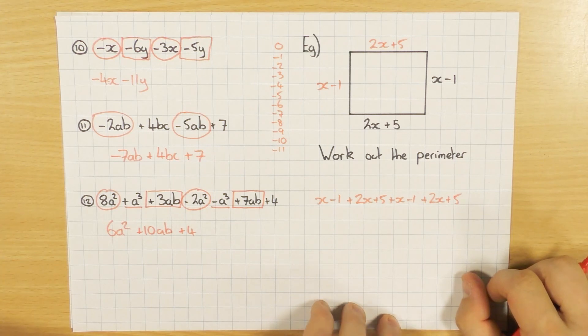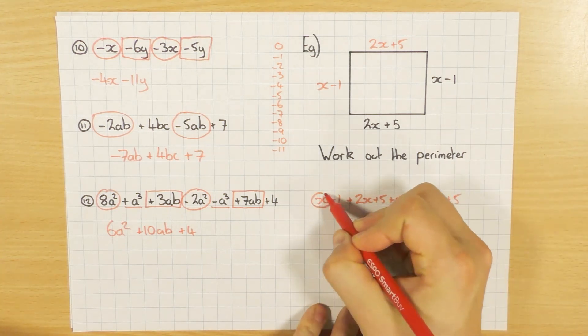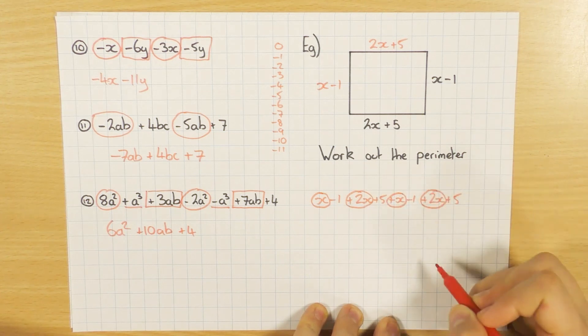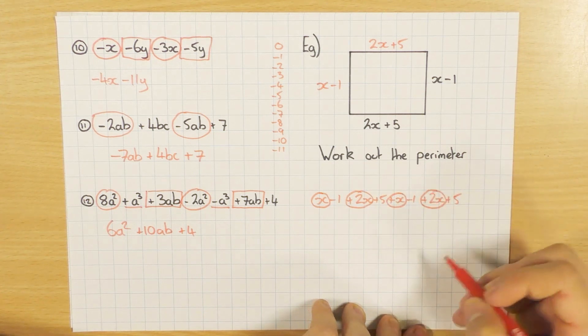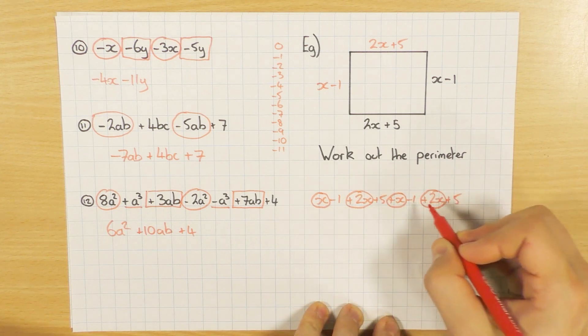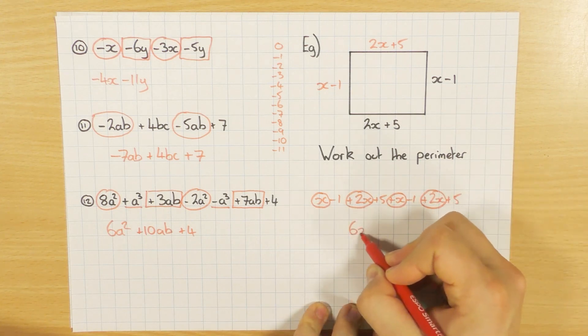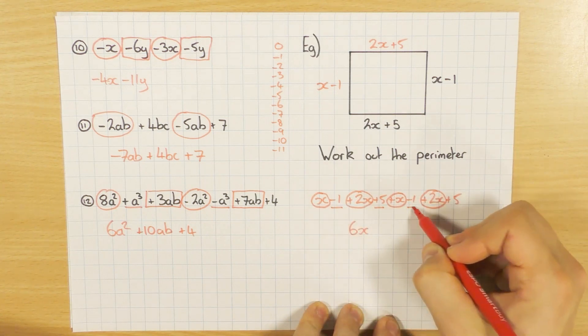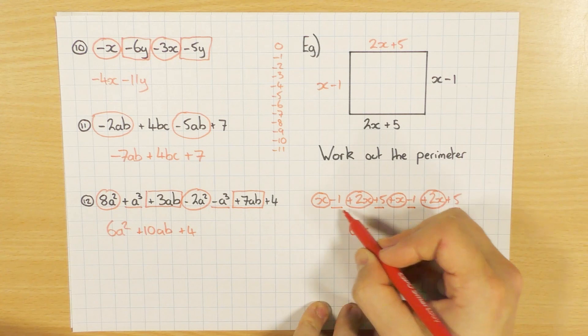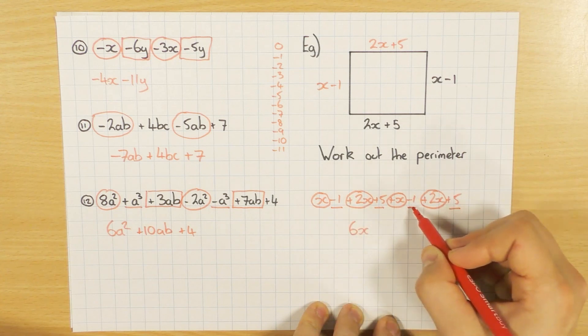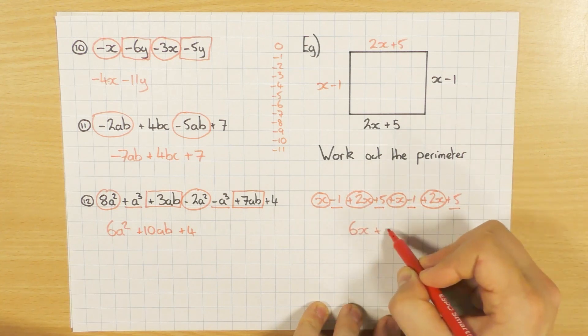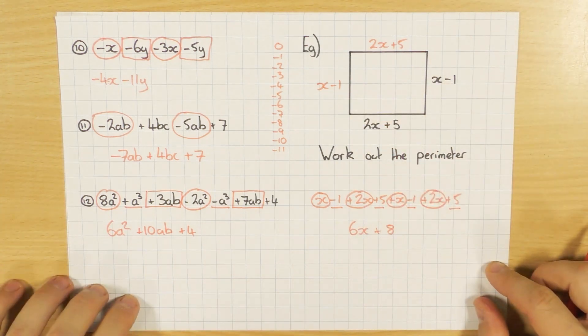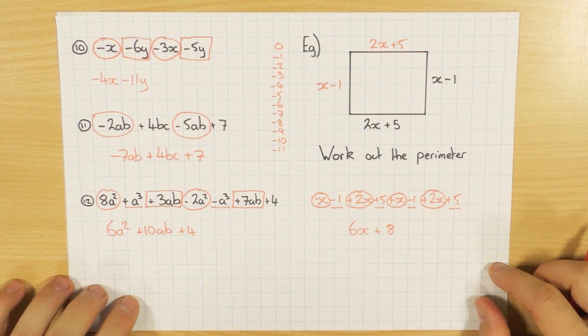So once you've written it all out, we can now simplify it. We can collect our like terms. So 1X, add 2X, another X, and a plus 2X. So how many X's do I have in total? 1, 2, 3, 4, 5, 6. Because they're all positive, I can just add them. And I've got my numbers. Minus 1 plus 5, minus 1 plus 5, minus 1 plus 5 is 4, take away 1 is 3, add 5 is 8. And so the perimeter of this shape is 6X plus 8. Just an example where collecting like terms can be used in a slightly different context.